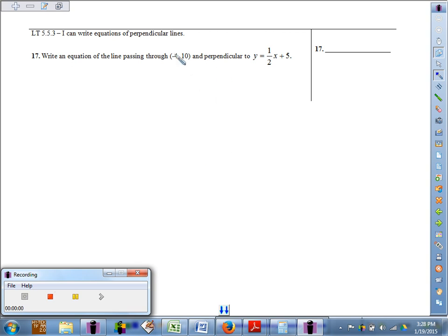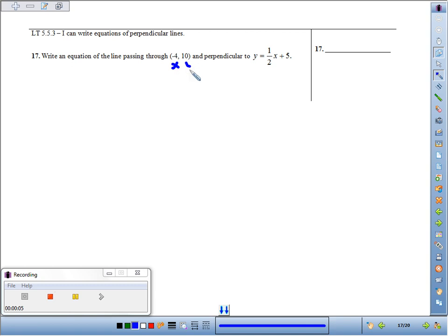Write an equation of a line passing through (-4, 10) and perpendicular to y = (1/2)x + 5. If two lines are perpendicular, keep in mind their slopes are opposite reciprocals.